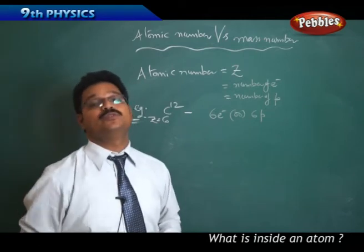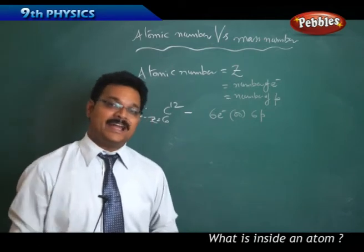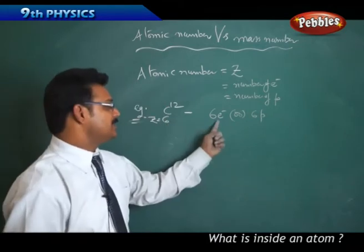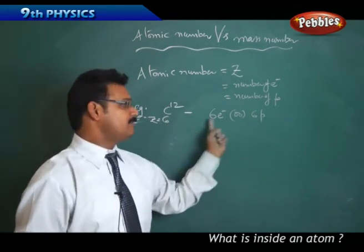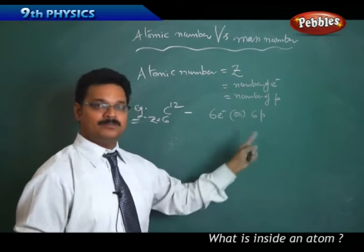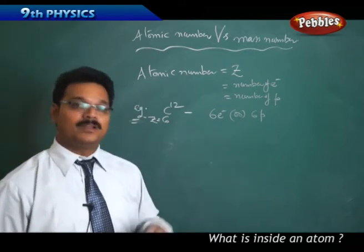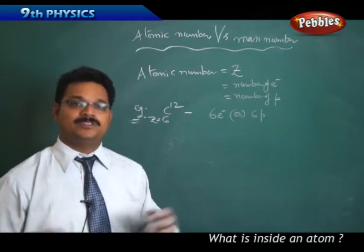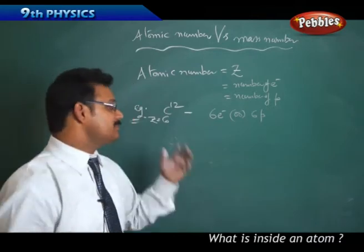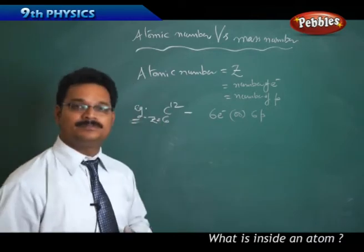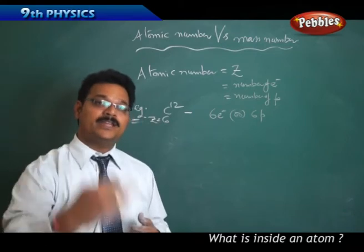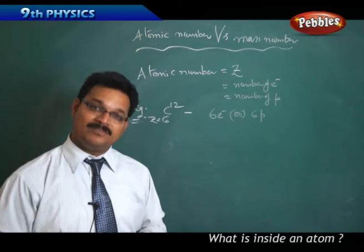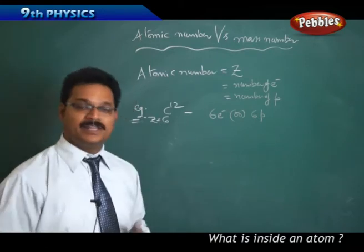Atoms are always neutral. Carbon is neutral because it has six negative charges (electrons) and six positive charges (protons) — they combine to give zero net charge. Nitrogen has seven negative and seven positive charges, also neutral. Atoms are always in a neutral state unless they enter a reaction and gain a negative or positive charge externally.